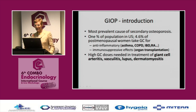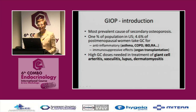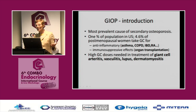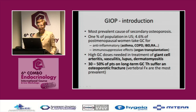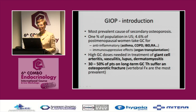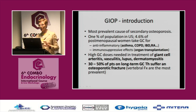The dosage of glucocorticoids is very important. In some diseases like giant cell arteritis, vasculitis, lupus, and dermatomyositis, we use very high dosages, and these treatments go for many months and even years. 30% to 50% of patients on long-term glucocorticoid therapy suffer an osteoporotic fracture. This is what we are afraid of and what we have to prevent.